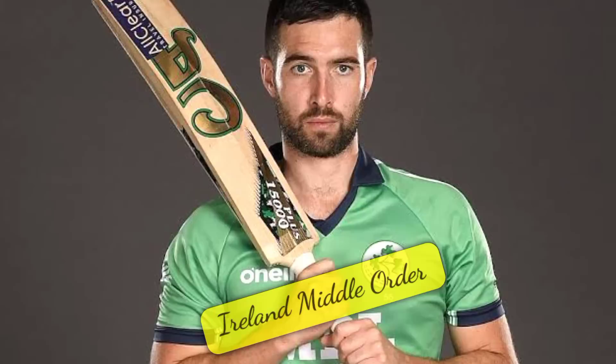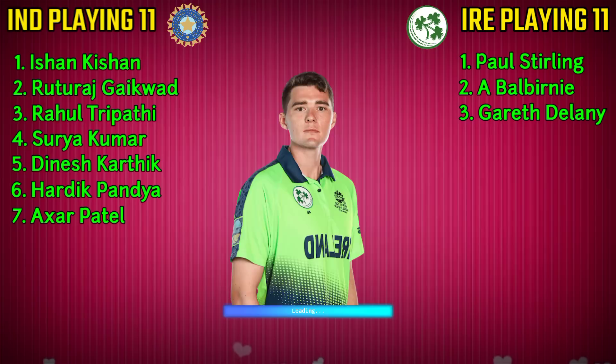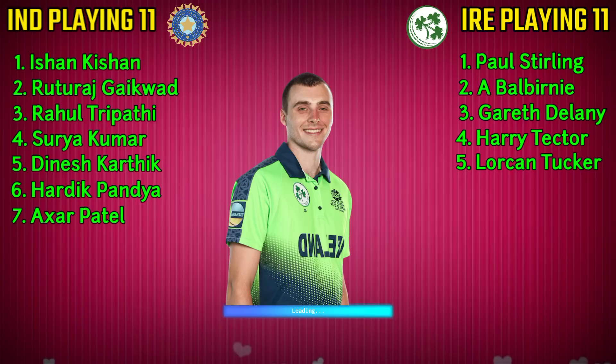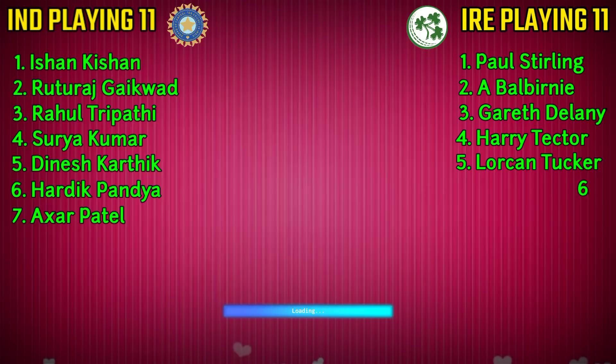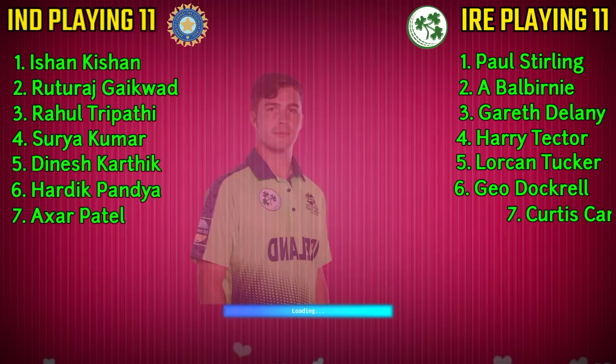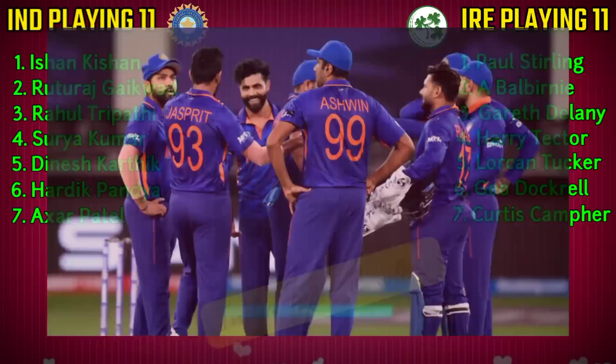Ireland team middle order: No.3 Gareth Delany, all-rounder. No.4 Harry Tector, right-handed batsman. No.5 Lorcan Tucker, wicket-keeper batsman. No.6 George Dockrell, all-rounder. No.7 Curtis Campher, all-rounder.